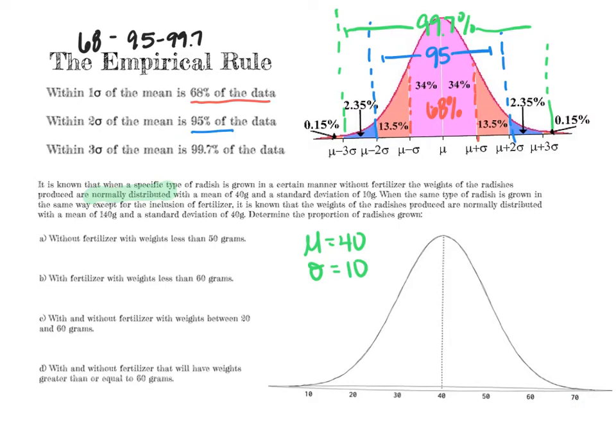The other part of this problem says we grow the radishes with fertilizer. The new mean is 140 and the new standard deviation is 40. We're going to draw that second curve to figure out some answers.